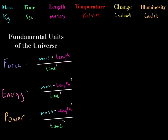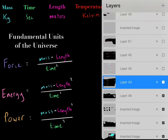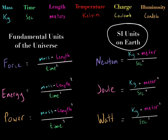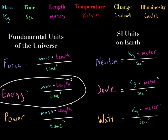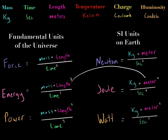The same applies to other variables. These are the fundamental units that make up energy, and these are the fundamental units that make up power. When we use SI units — kilograms, meters, seconds — we get joules for energy and watts for power. These equations represent real phenomena in the universe, and we use SI units to describe them consistently.